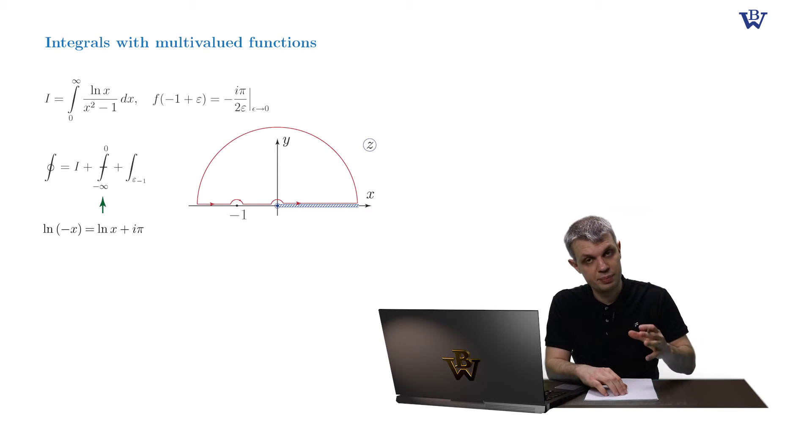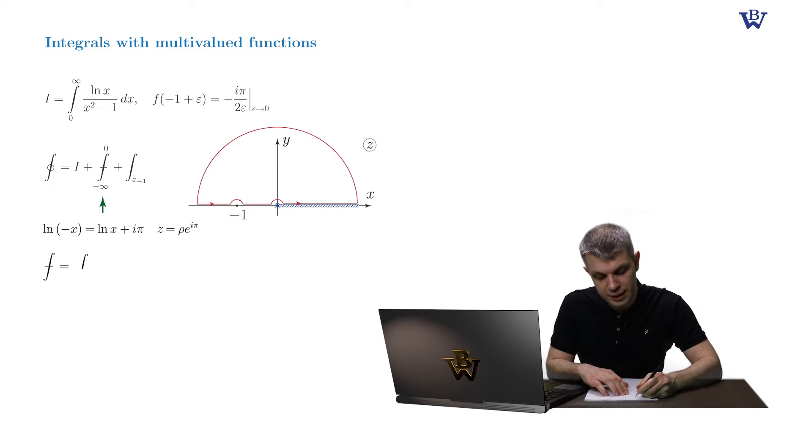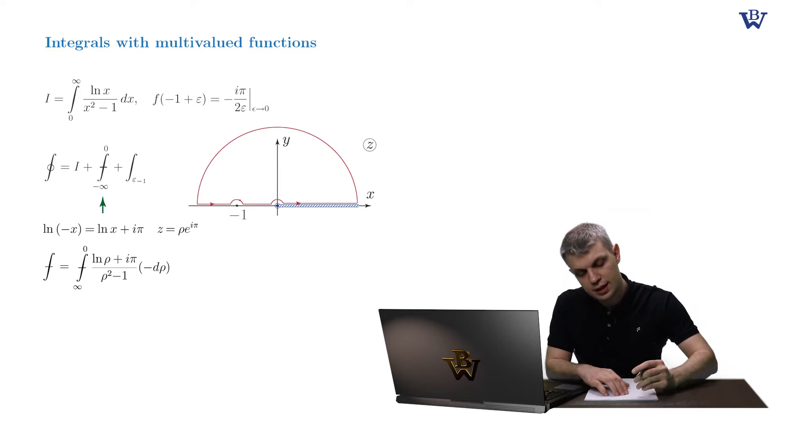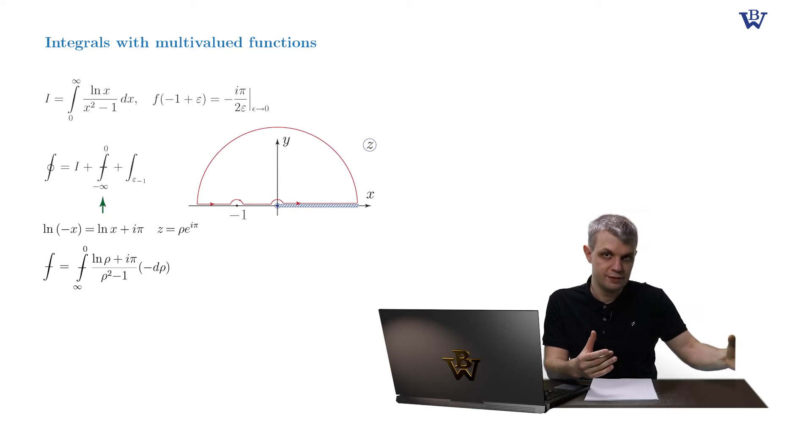Therefore, the necessary parameterization of the negative semi-axis is z equals ρ times e to iπ. This way, we write for the principal value integral: the integral from plus infinity to zero, log ρ plus iπ over ρ squared minus one dρ. Keep watch carefully for the limits of integration. It's from plus infinity to zero. That's because we integrate of the modulus of ρ and it changes from plus infinity to zero.